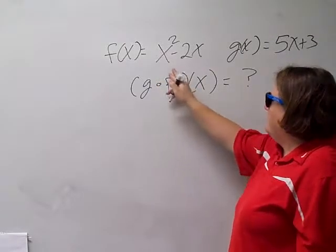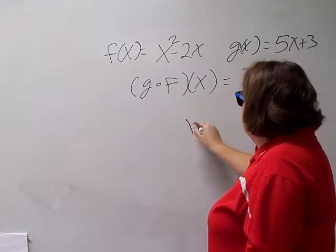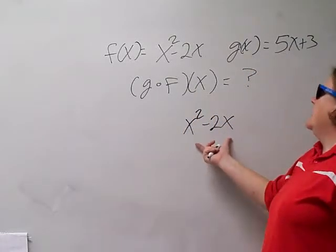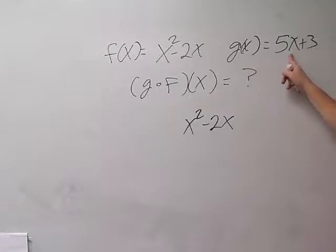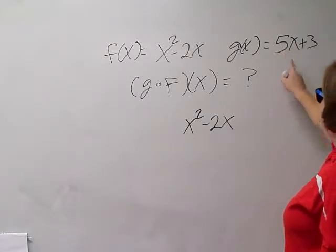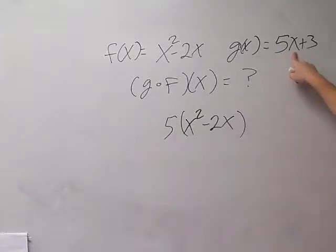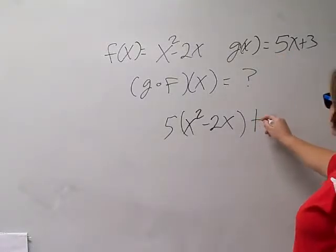So the way I start, I'm going to write the inside function first. x squared minus 2x. Now that whole thing is going to be the x in the g(x) function. So I need to multiply that whole thing by 5. See, 5 times x. And then I need to add 3 to that whole thing.